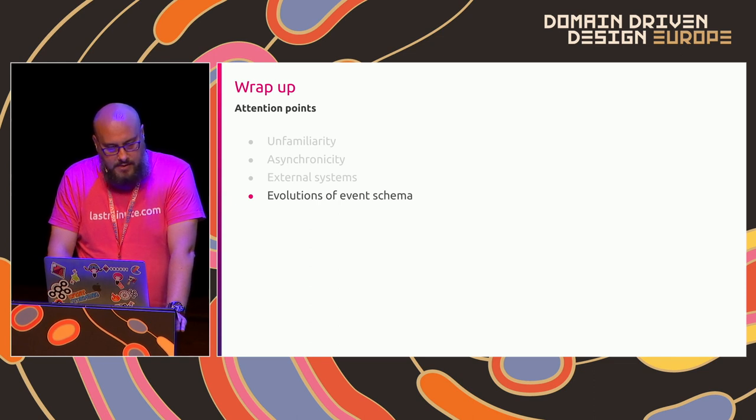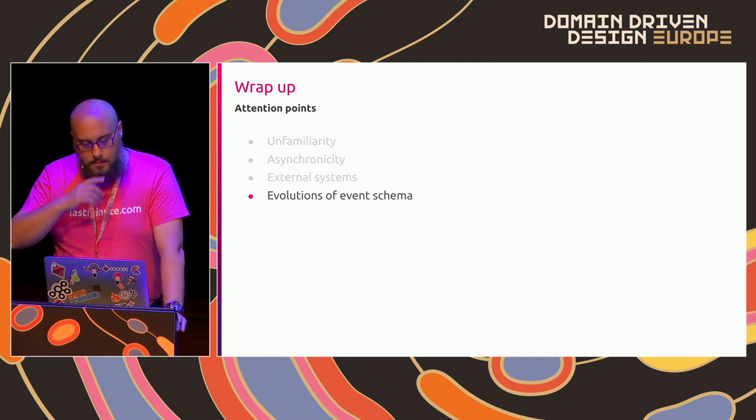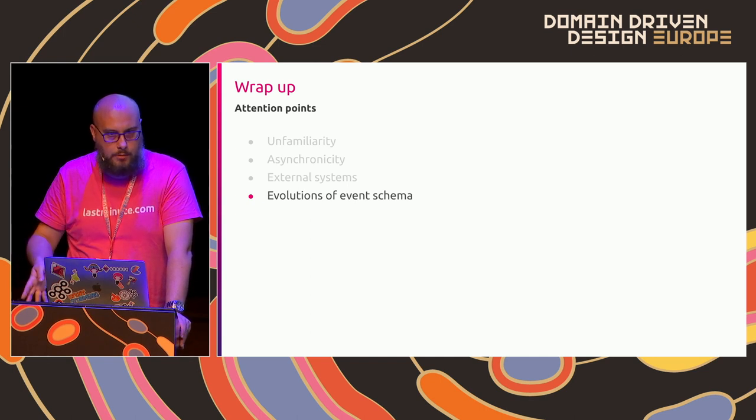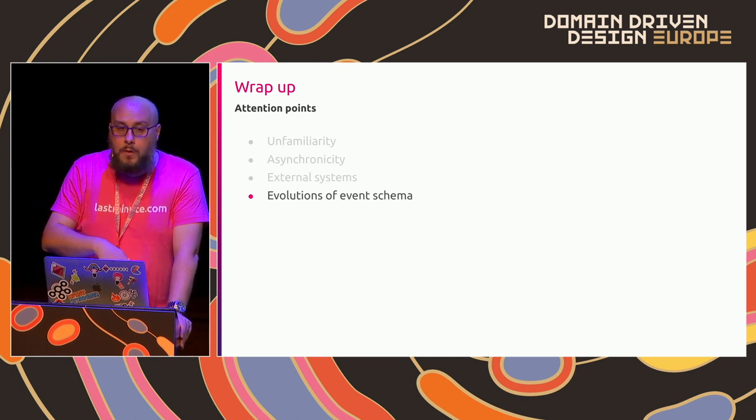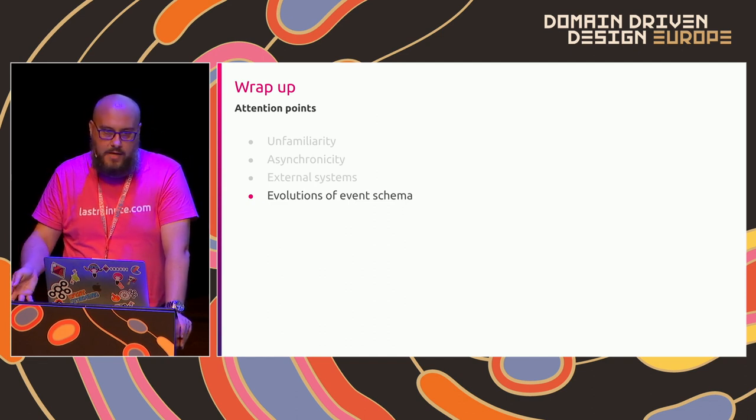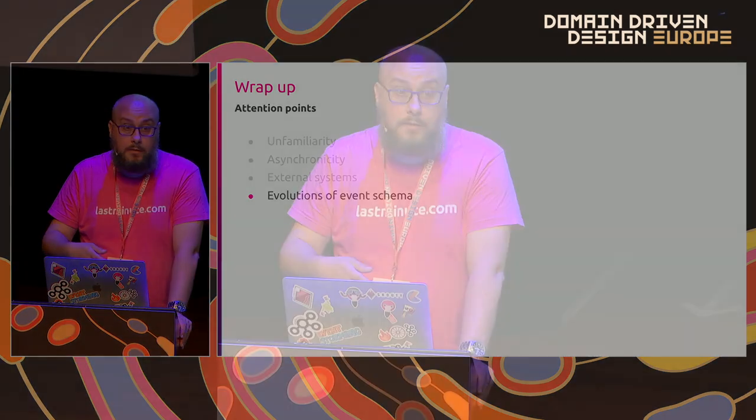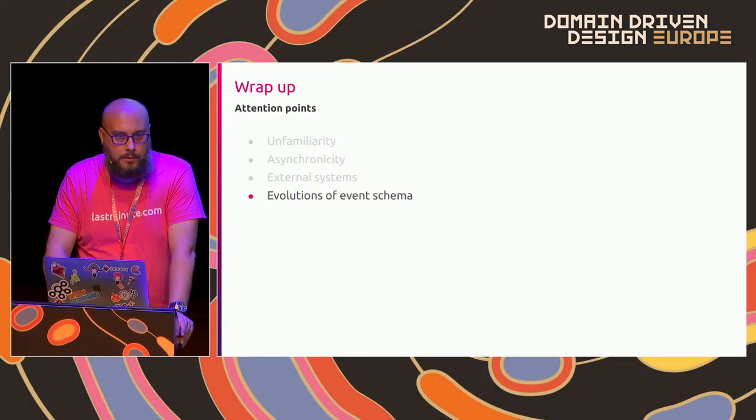Another attention point is the evolution of the event schema. The system will change, and to accommodate those changes we'll probably need to change the events — adding new ones, perhaps removing some, or in the worst case changing their internal structure. This is something we need to take into account. There are books written on this topic; there is a great book about event evolution written by Greg Young, freely available on LeanPub. In my opinion, that's the first place you should go.